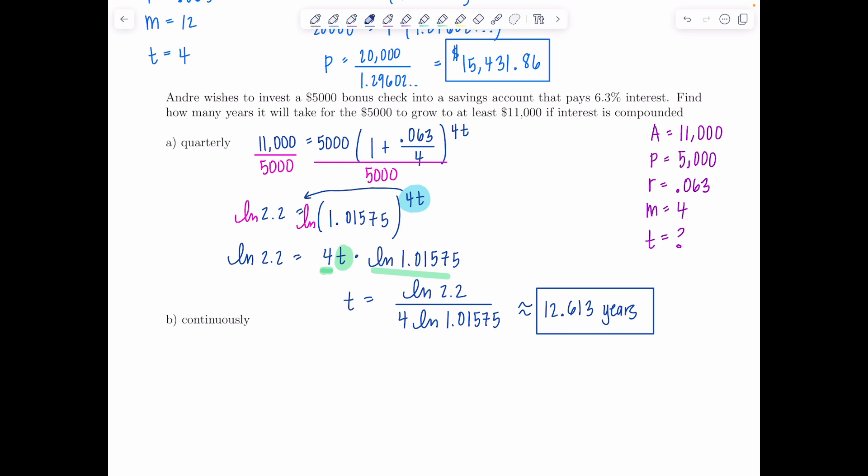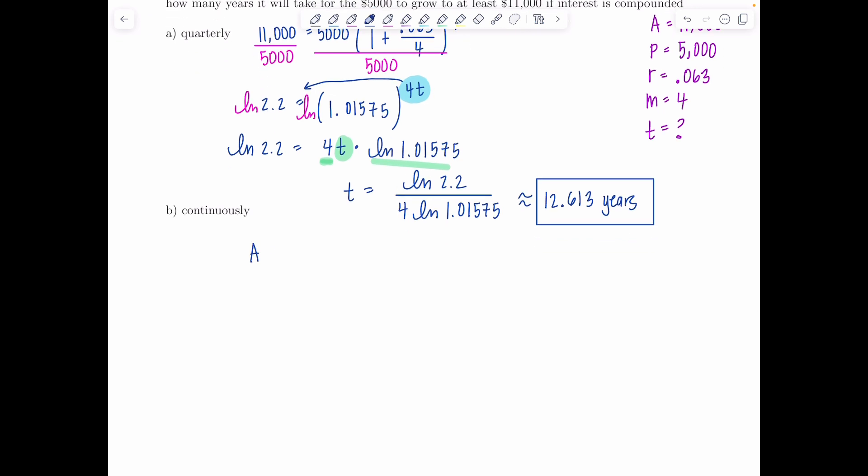What if it's compounded continuously, will that save us some time? So now we're going to use a different formula. Remember for continuously compounded interest we use that pert formula. This will actually be easier to work with. So A is 11,000, P is still 5000, E to the point zero six three times T. The first step is the same so we divide by 5000 you always want to isolate the base. So divide by 5000 and then we have 2.2 equals E to the point zero six three T.